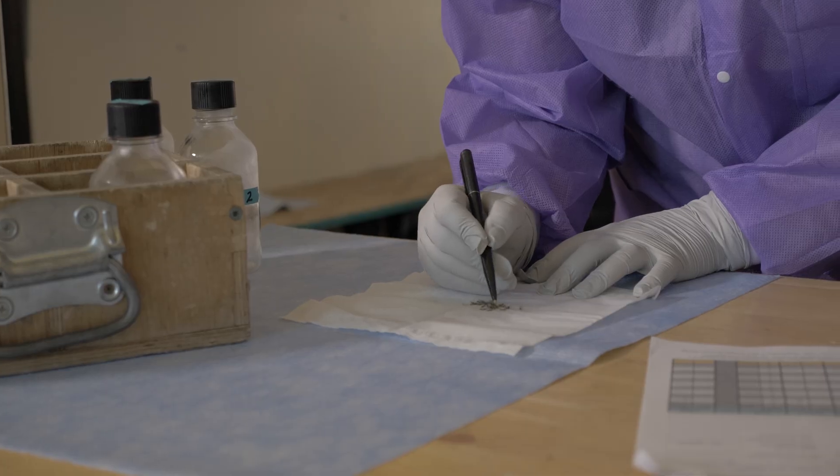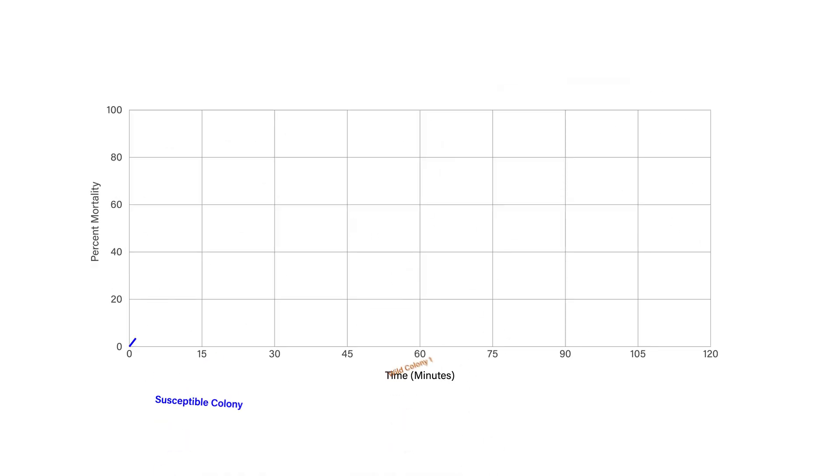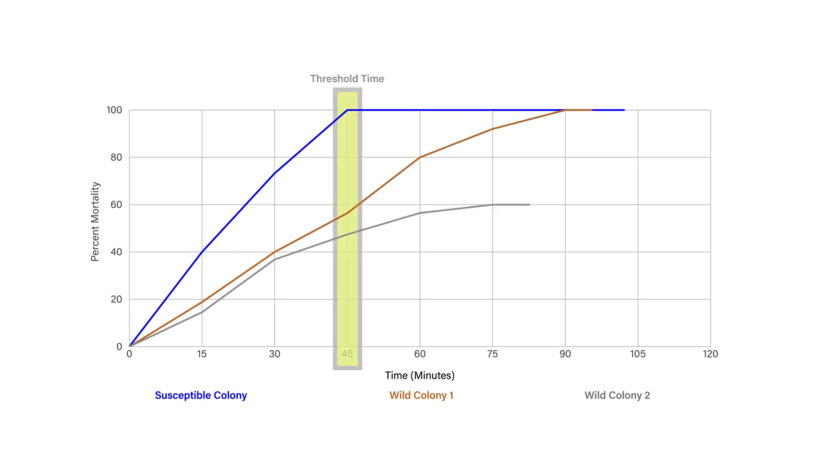Let's look at an example. Say you logged the number of mosquitoes that had died at 15 minute intervals. Your mortality curve might look like this. The shape of the mortality curve beyond the 45 minute threshold time, or the time at which all susceptible mosquitoes should have died, gives valuable information on how strong the resistance mechanism is. In this case, we were able to see that wild mosquitoes are resistant to the insecticide tested.